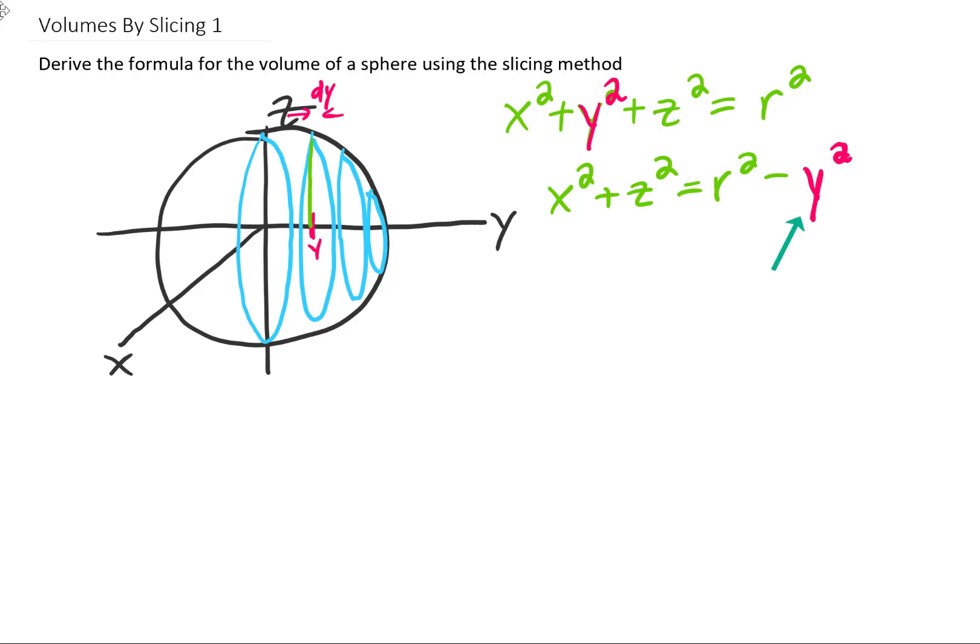And looking at this one specific slice of the sphere, this y is a constant as well. So what we have is a circle in the xz plane, whose radius squared is r squared minus y squared.